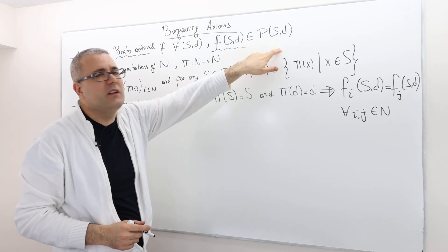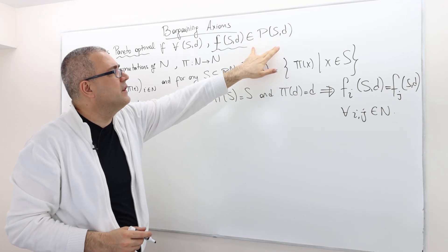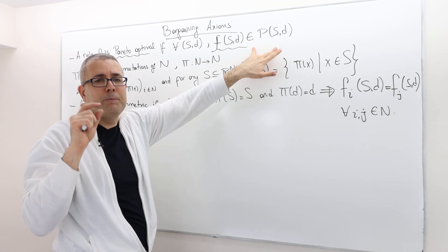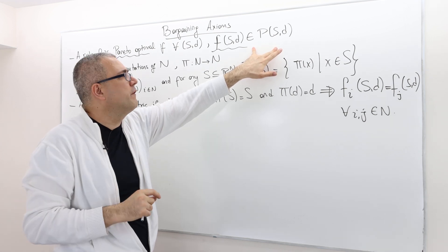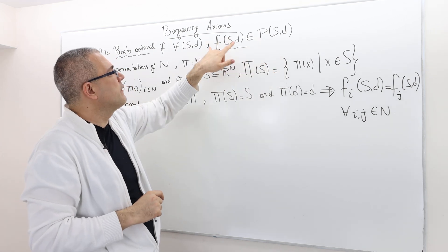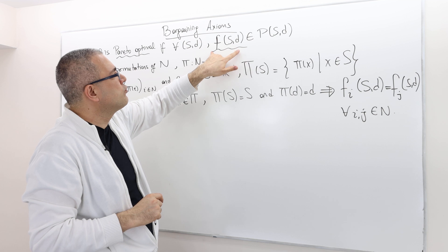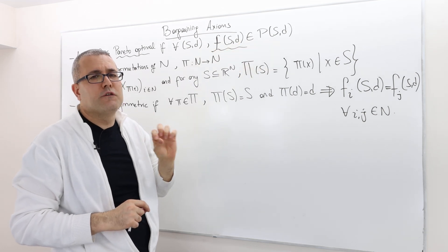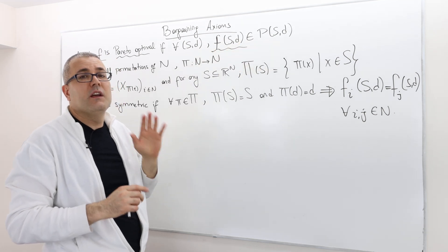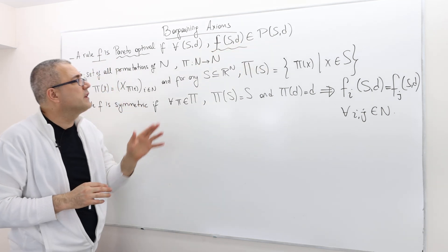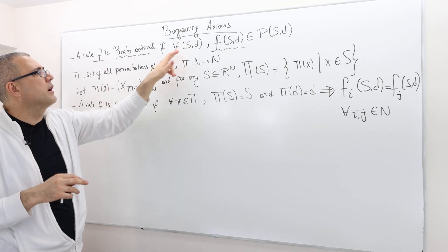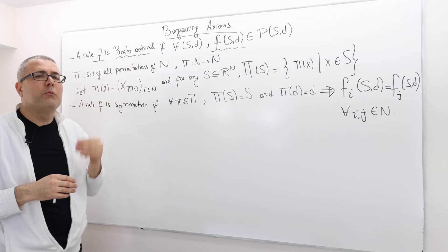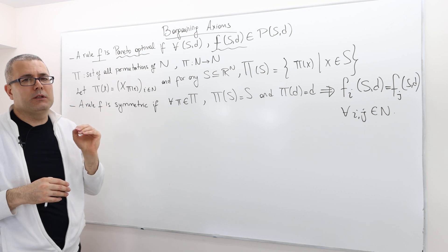So remember P(S,D) — P(S,D) is the set of Pareto-optimal payoff vectors. Therefore, your rule should always be choosing an element from this set. If this is the case for any bargaining problem, then we call this rule Pareto-optimal.